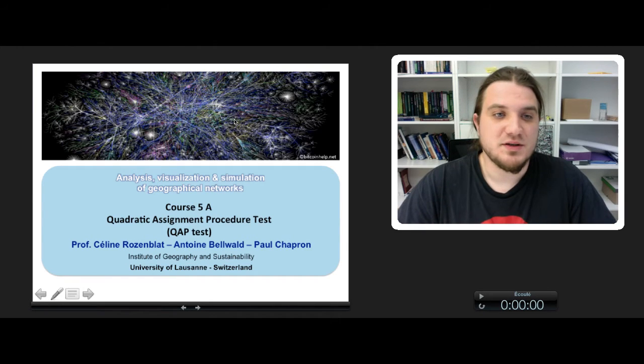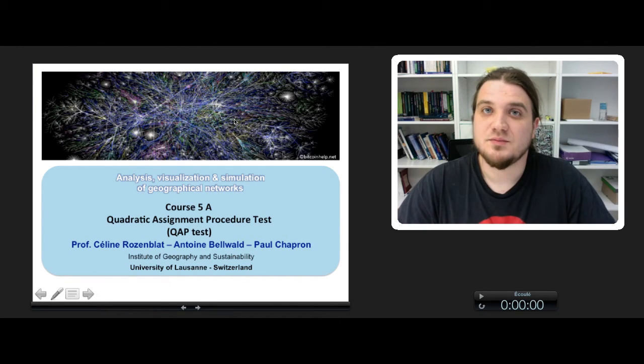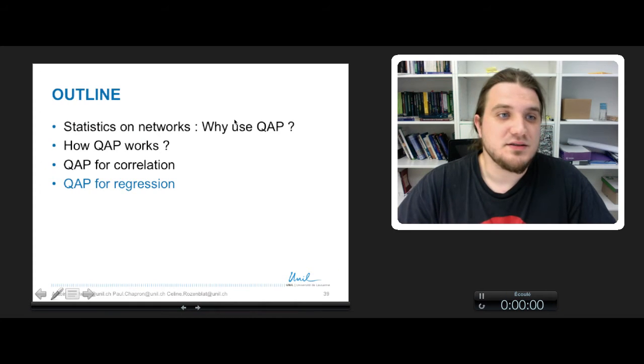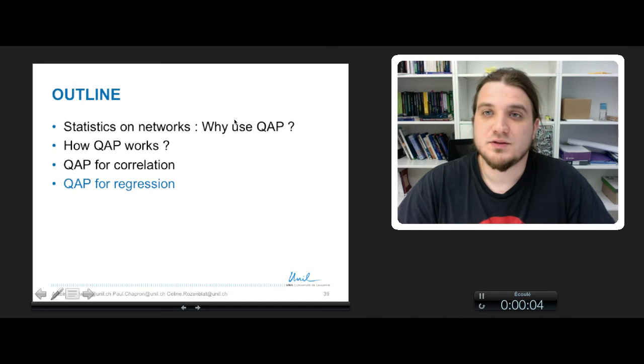Ok, so this should be the last part of the course 5A on QAP tests for correlation between networks. And in this final part we address regression using the QAP test.